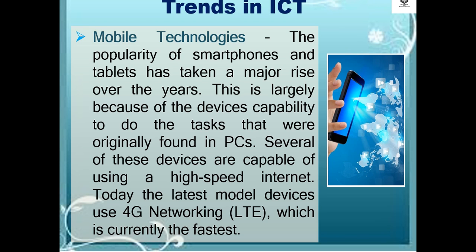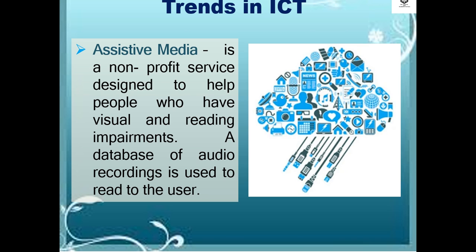To date, the latest model devices use 4G networking, or LTE, which is currently the fastest. Next is assistive media — a non-profit service designed to help people who have visual and reading impairments. A database of audio recordings is used to read to the user.